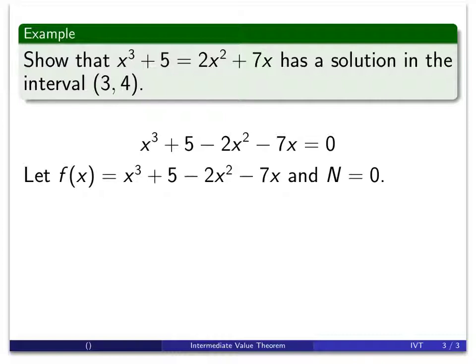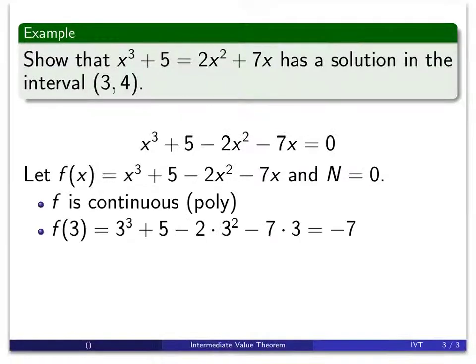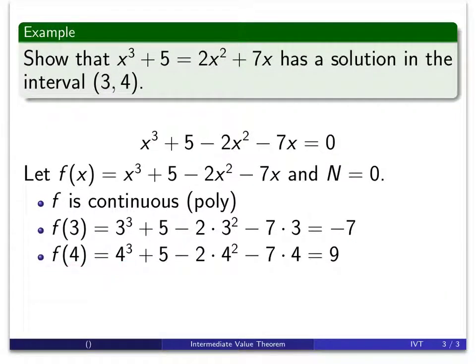We do exactly as we did before. We're going to evaluate the function at both the endpoints, this time at 3 and at 4. We're going to look and make sure that the function is continuous. That's actually, I think, the first thing we do. And then we verify that 0 is between those two functions. So f is continuous, it's a polynomial. f(3), we plug 3 into all the values for x, and we get -7. So f(3) is -7. f(4), we plug everything in, we get positive 9. And this is the nice thing about having N be 0, because it's very easy to recognize that 0 is between a negative number and a positive number.